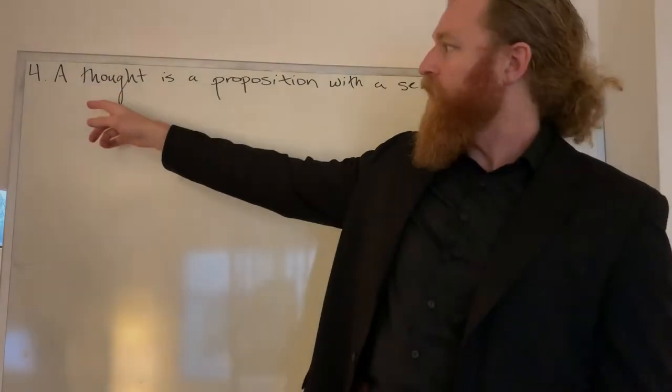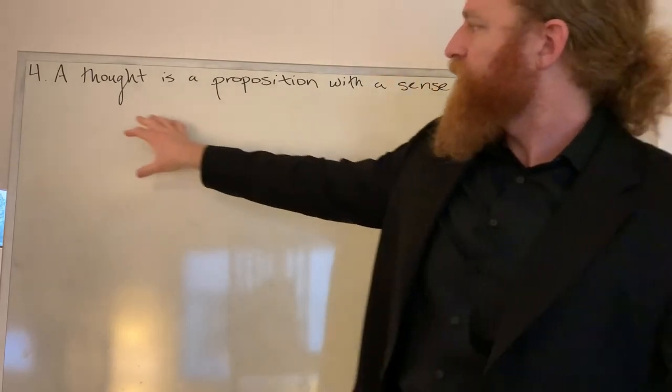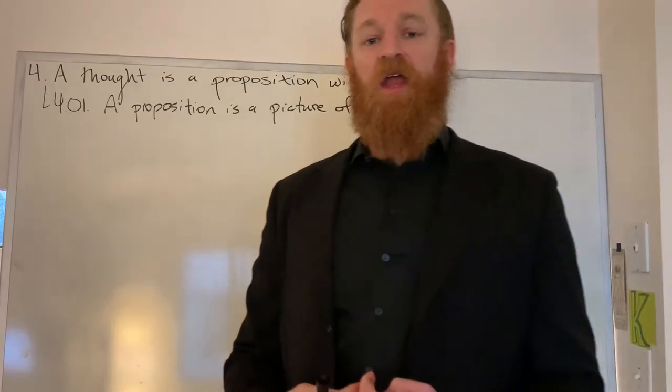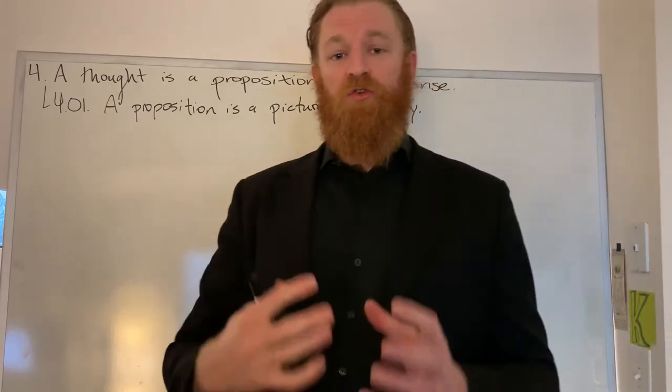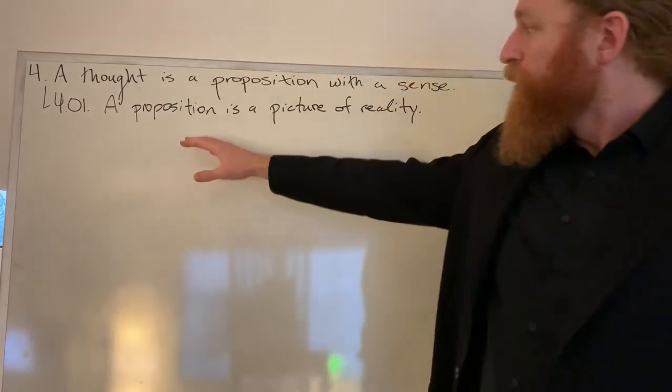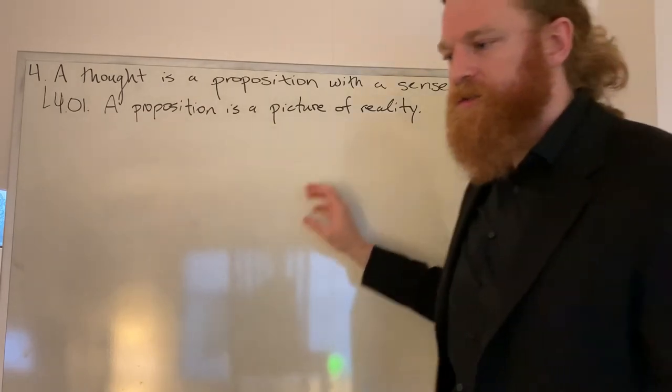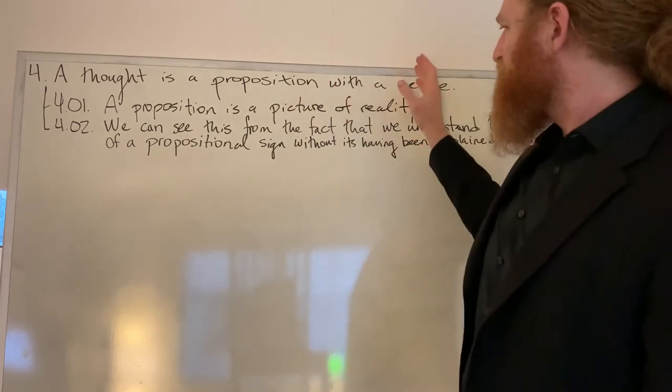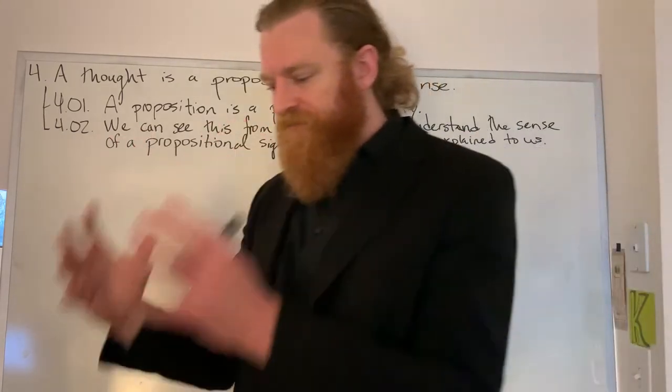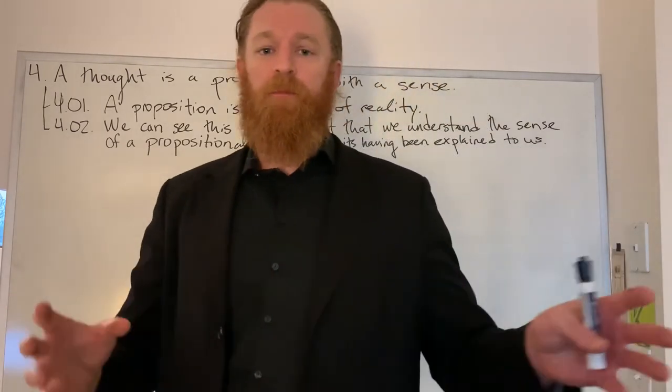Wittgenstein's proposition four is as follows: a thought is a proposition with a sense, connecting together his previous discussion of the notion of meaning with the notion of thought in the idea of a proposition. A thought is a proposition that can be assigned a determinant meaning. Since for Wittgenstein, a meaning is a picture, that is the presence of a pictorial form, or a structure that mirrors or has an isomorphism to another structure, a fact that mimics another fact, a proposition is going to be a picture of reality. So the sense of a proposition is always just the fact whose structure that proposition mirrors.